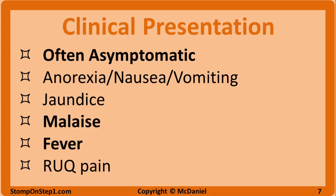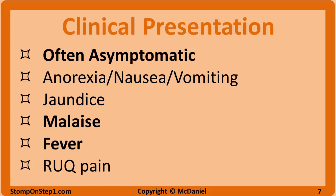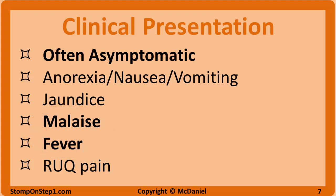Viral hepatitis can have a wide variety of clinical presentations, and given the large amount of overlap between the different viruses, you cannot make the diagnosis based on symptoms alone. Viral hepatitis is often only subclinical or asymptomatic, but these individuals can still spread the disease to others. When symptomatic, it is primarily characterized by anorexia, nausea and vomiting, jaundice or yellowing of the skin, dark urine, malaise, and fever. There may also be hepatomegaly, or enlargement of the liver, with associated right upper quadrant pain. These symptoms often don't arise until multiple weeks after infection.